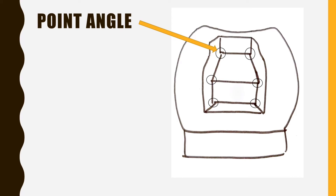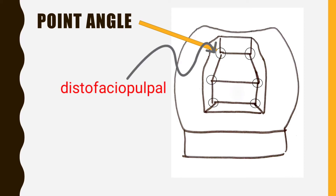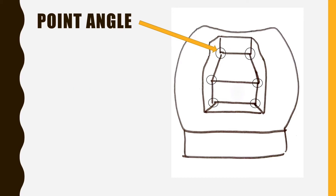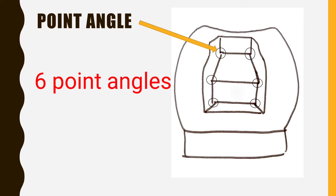A point angle is made by the junction of three surfaces. For example, this is called the disto-facial-pulpal point angle because it is made by the junction of the distal, facial, and pulpal surfaces. In this preparation there are six point angles.